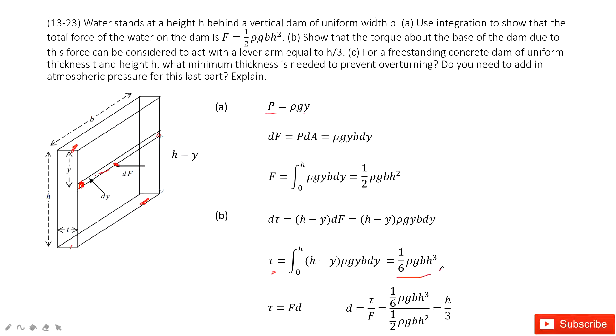Right, now you can see we know the force and we also know the torque. Can you find d? Can you find the lever arm? Sure, because torque equals force times this lever arm d. So d is torque over F. You can find, yes, it's exactly h over 3.